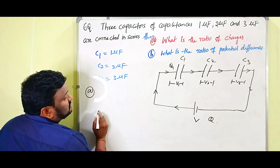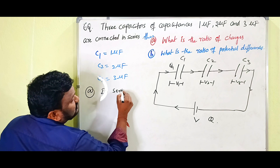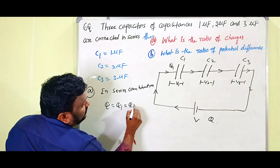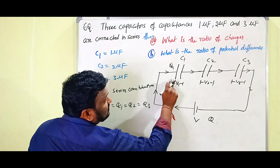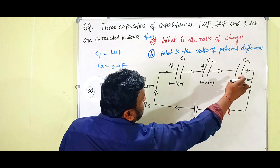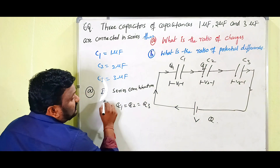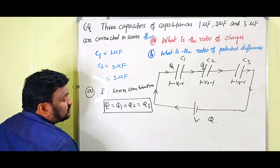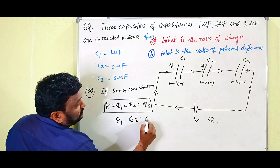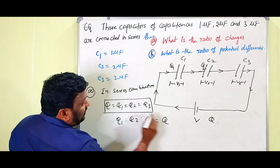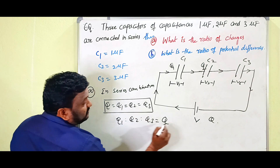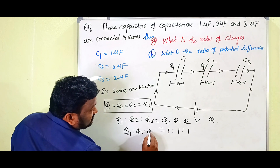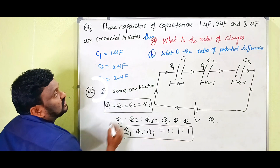Now let's write the ratio of charges. In series combination, Q1 = Q2 = Q3. Q1 is the charge on the first capacitor, Q2 on the second, Q3 on the third. Since all charges are equal to Q, the ratio Q1 : Q2 : Q3 = Q : Q : Q = 1 : 1 : 1. Therefore Q1 : Q2 : Q3 = 1 : 1 : 1. This is the first part answer.